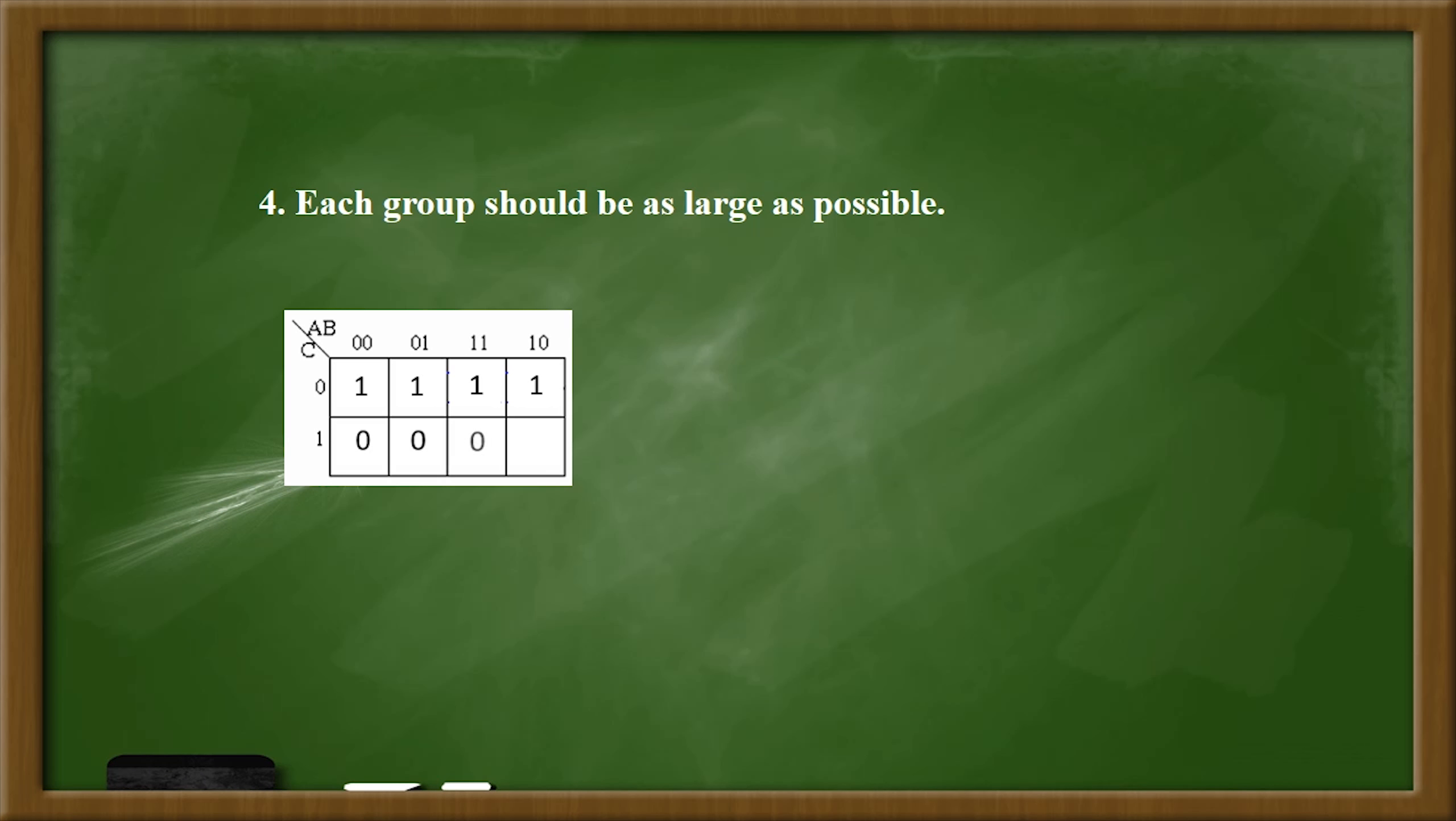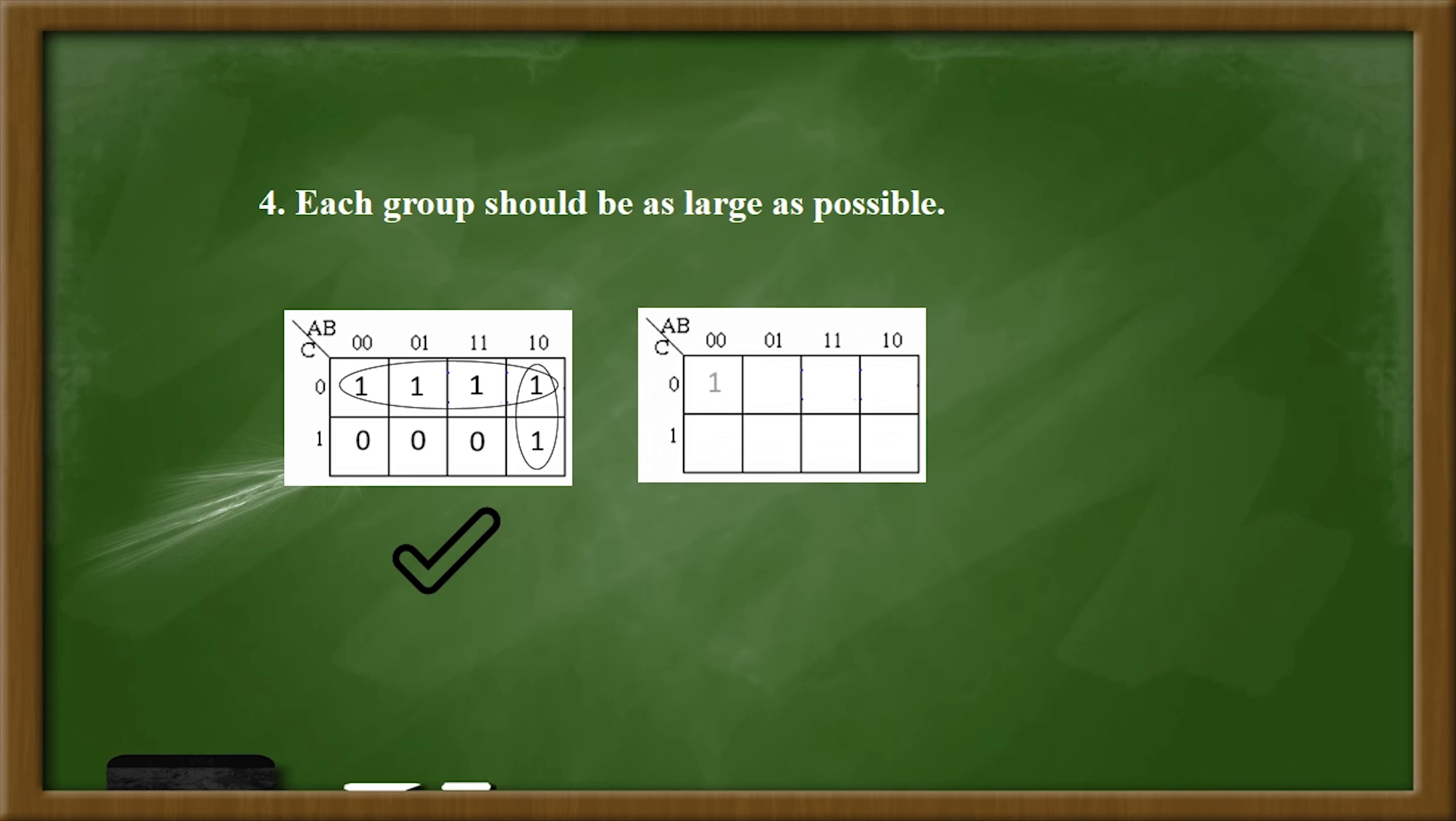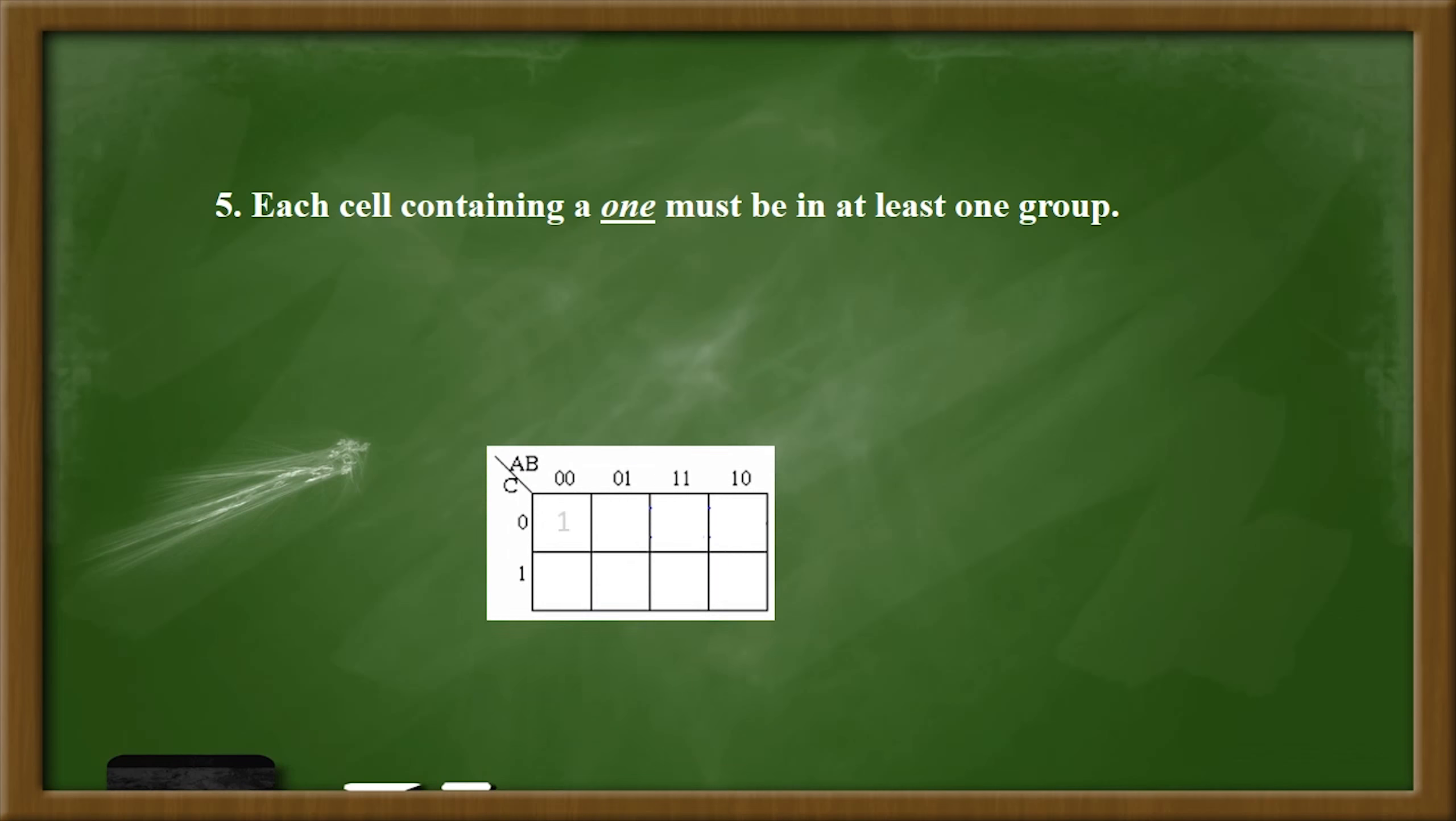Each group should be as large as possible, as we can see on the first one, unlike the second one. Each cell containing a one must be in at least one group, so all of ones must be included even if it's own group.